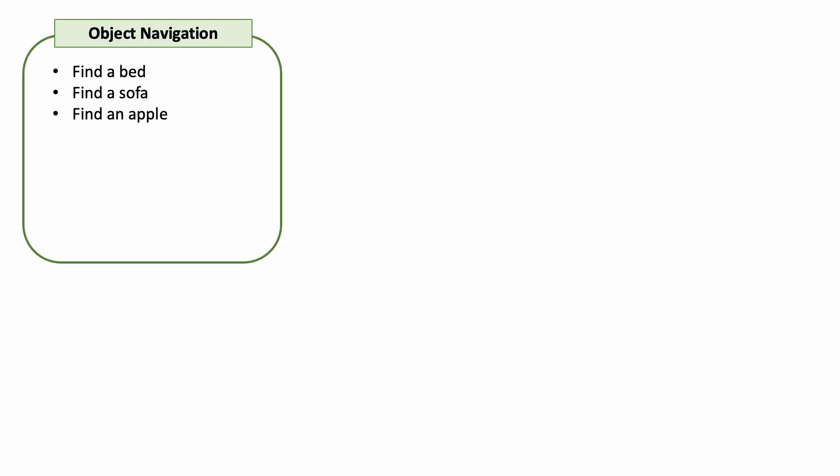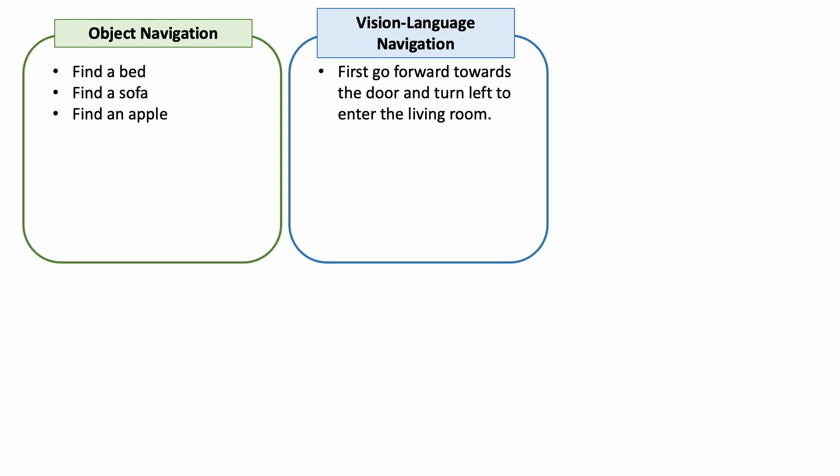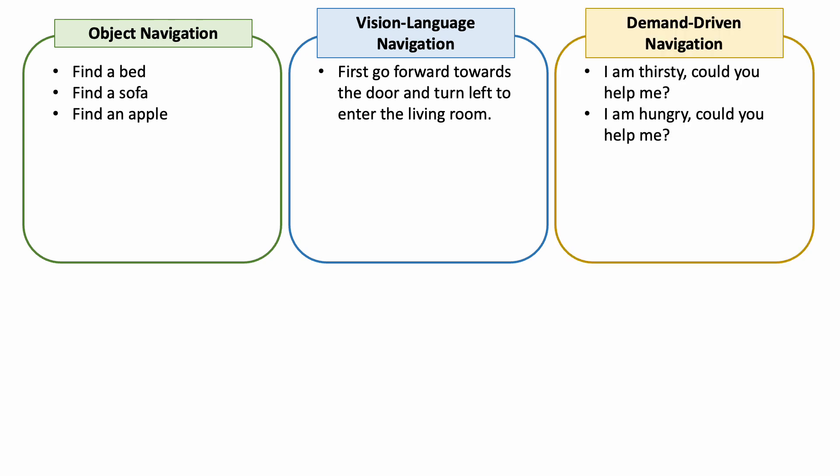Embodied navigation is a crucial skill for home assistant robots. Currently, there are mainly three different types of navigation tasks, including object navigation, vision-language navigation, and demand-driven navigation.